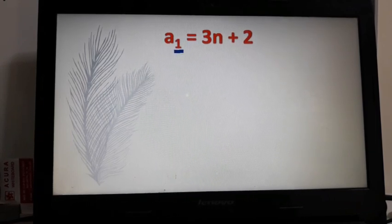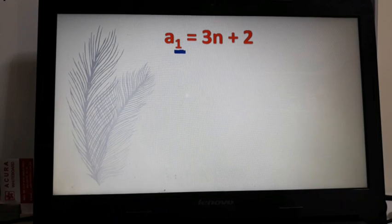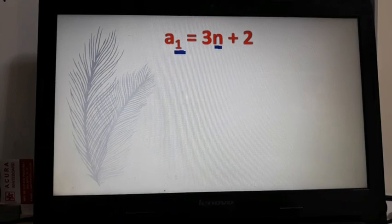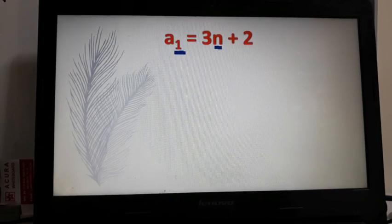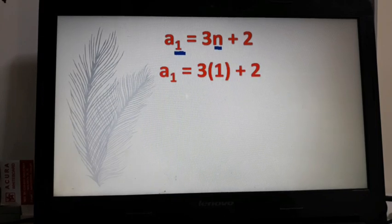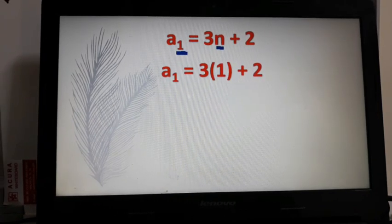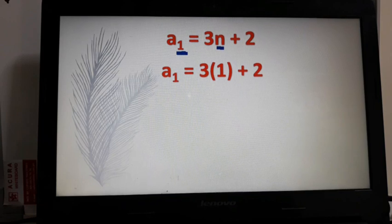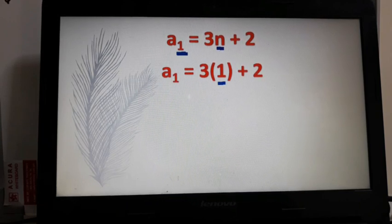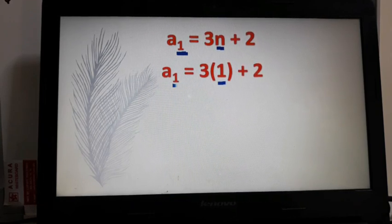And then this value, the value of 1 here, will replace the n in our formula. So let's solve. a_1 equals 3 times 1 plus 2. That's where the 1 comes from.